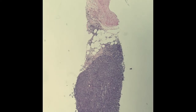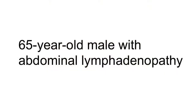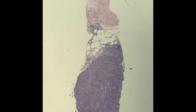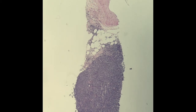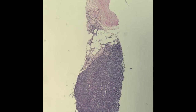This is a needle core biopsy of an abdominal lymph node from a 65-year-old gentleman. But before we got the H&E specimen, about 24 hours after the biopsy was performed, we received flow cytometry. We had those flow results prior to obtaining the histology, so it's worth looking at that first so you can see how our workup of this case evolved in real time.